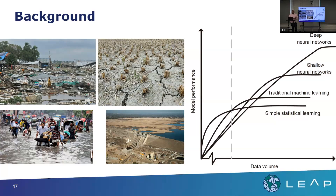Some of these developing nations depend on hydroelectricity for their development of power. With extreme flooding, which could disrupt the production of crops in India, or with extreme drought, which could prevent electrical production in developing countries, we want to do a better job at projecting precipitation and also extreme precipitation events like droughts and floods.